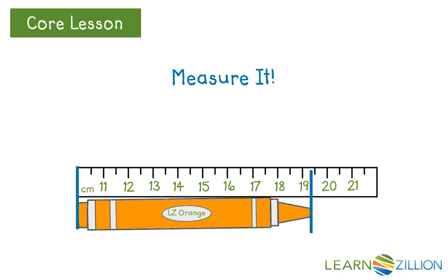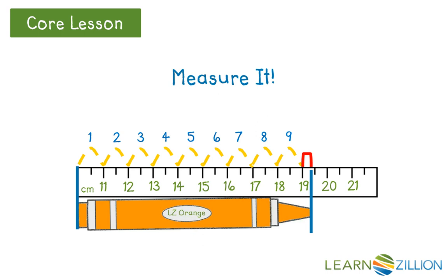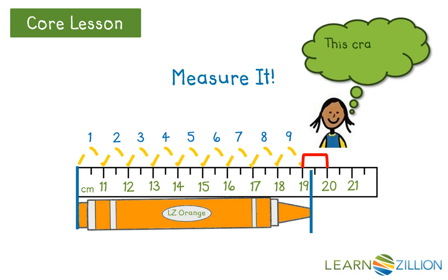From the beginning of the ruler to the number 11 is one space. From 11 to 12 is two spaces. From 12 to 13 is three spaces. We keep counting the spaces until we reach the end of the crayon. We can see that the crayon is nine whole spaces long, and then some — that little more is less than one half of a space. The crayon is closer to the number 19 on the ruler, which is nine whole spaces. We can say that the crayon is almost nine whole centimeters long.